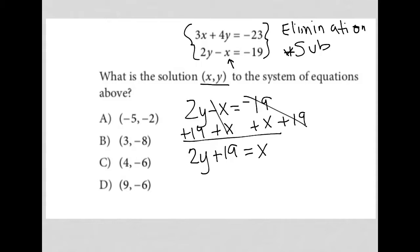So now that I know that x is 2y plus 19, I take that entire quantity and substitute the x from the other equation. So I end up with 3(2y plus 19) plus 4y equals negative 23.